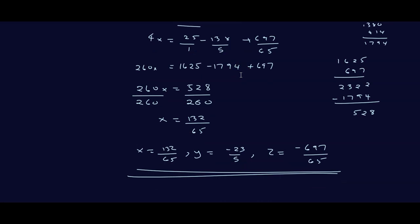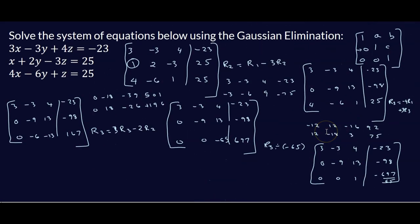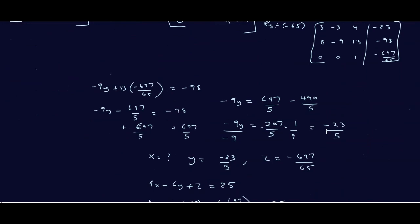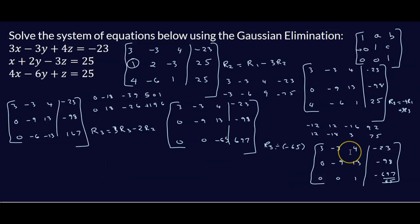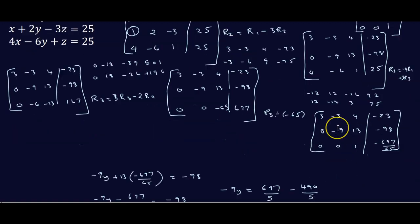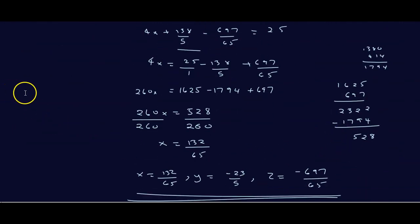This is generally the method you follow for Gaussian elimination: find the value of one variable first, substitute it into the other equations to get the remaining variables, and arrive at the complete solution to the system.